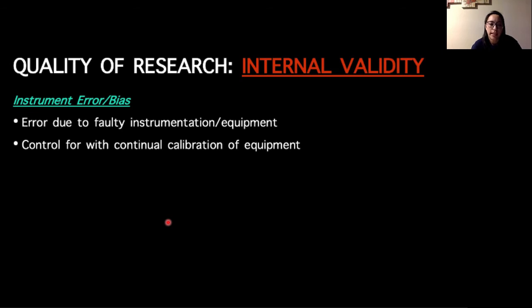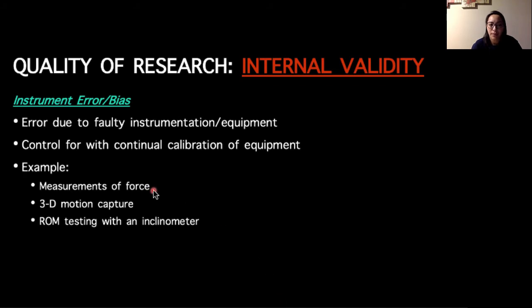Another type of threat to internal validity is instrument error or bias. So this is error due to faulty instrumentation or equipment, and usually is controlled with continual calibration of the equipment. The best example I can come up with is measurements of force, or if you're taking a person's weight on a scale. Usually there's a tear function or a zero function where you zero out the force plate, where you zero out the scale, and then you take your measurement. 3D motion capture calibrates three-dimensional space based on a set origin.